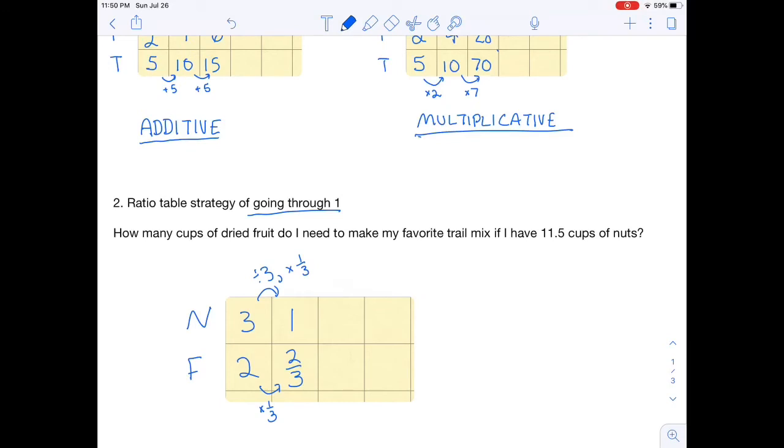Now I'm going to take my one and I'm going to go up to 11 and a half. Since I have two thirds as a fraction, I'm going to go ahead and write 11 and a half in fraction form. This is a mixed number and I'm going to rewrite it as an improper fraction. So how do I get from one to 23 halves? Well, I'm going to multiply by 23 over two.